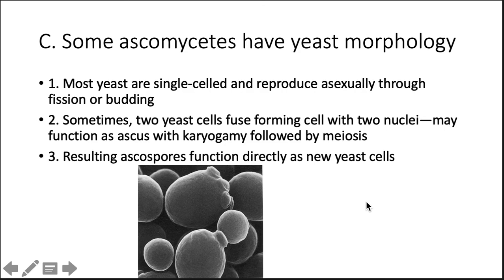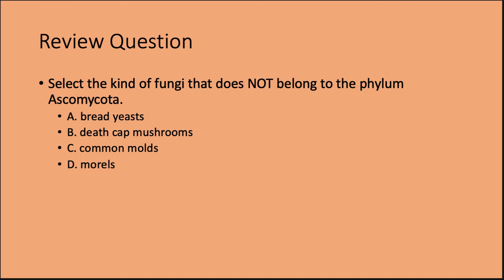Some ascomycetes have yeast morphology. Most yeast are single-celled and reproduce asexually through fission or budding — usually budding. The ability of yeast to ferment carbohydrates — breaking down glucose to produce alcohol and carbon dioxide — is fundamental in the production of bread, wine, beer, and other alcoholic beverages. Sourdough bread is actually a unique culture of ascomycetes. Sometimes two yeast cells fuse to form a cell with two nuclei that can function as the ascus with karyogamy followed by meiosis, resulting in two new yeast cells. Review: the kind of fungi not belonging to phylum ascomycota is B — the death cap mushroom.